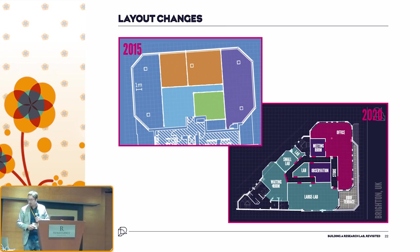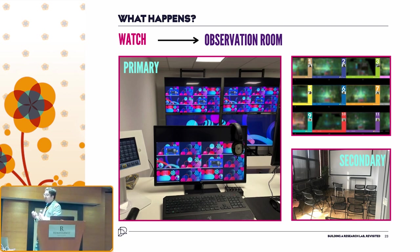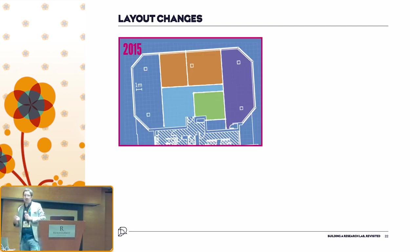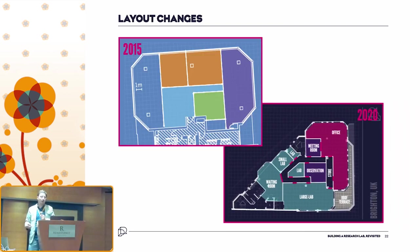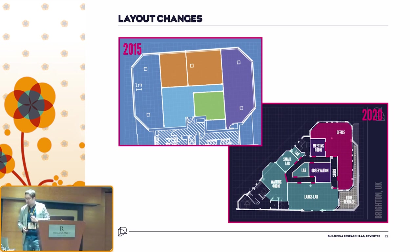In the Brighton facility we actually have four spaces that can be used for observation: one dedicated observation room and three hybrid spaces, letting us potentially run multiple sessions at once. Again, maximizing that versatility.